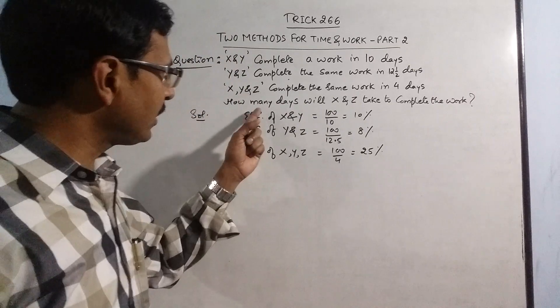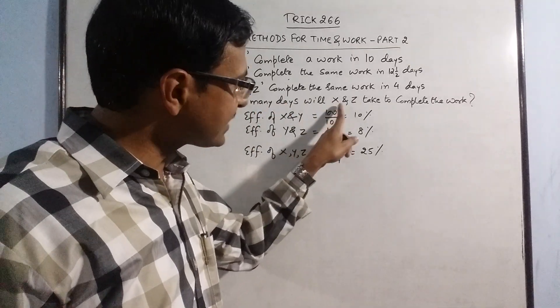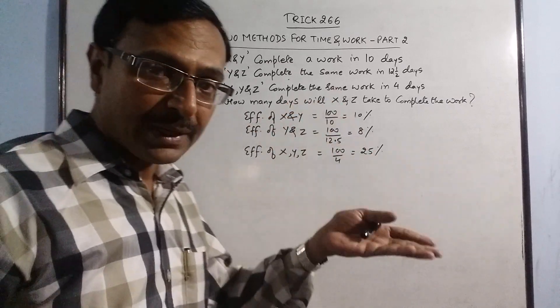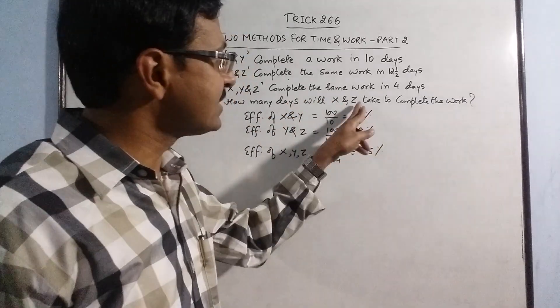Now see you need to find out the number of days taken by x and z. So first of all we need to find out how many days will x alone take and how many days will z alone take.